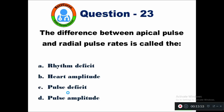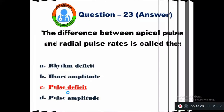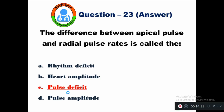Question 23: The difference between apical pulse and radial pulse rate is called — option A rhythm deficit, B heart amplitude, C pulse deficit, D pulse amplitude. The difference between apical pulse and radial pulse rate is known as pulse deficit.